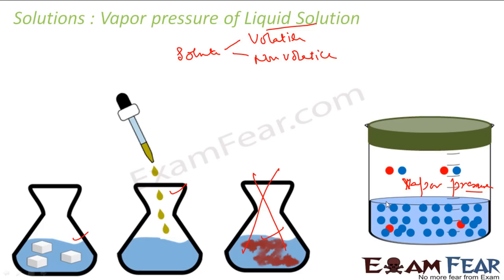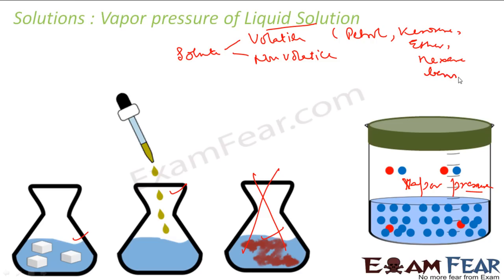So what is volatile? Volatile is a substance that is easily evaporated. For example, petrol, kerosene, ether, hexane, benzene, alcohol — all these are examples of volatile substances. Non-volatile, for example, sugar, salt — they don't evaporate. So those are volatile and non-volatile substances.